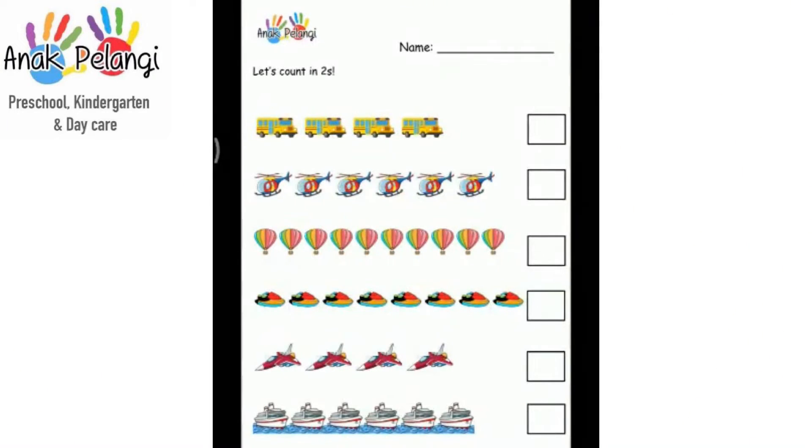Let's count in twos. Let's start with the buses. Counting in twos means circle in twos first.